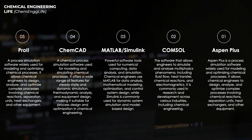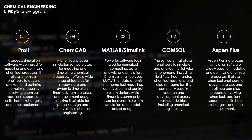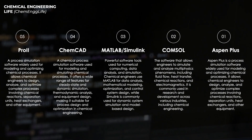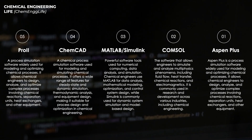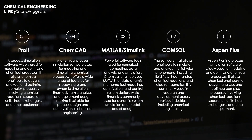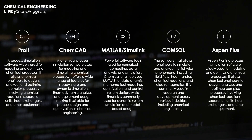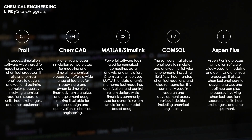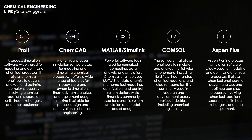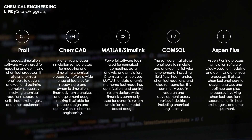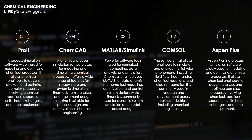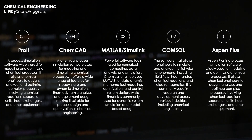Aspen Plus allows engineers to create detailed process models, analyze performance under different operating conditions, and optimize design to meet desired objectives such as cost reduction, energy efficiency, and product quality improvement. The importance of Aspen Plus in the field of chemical engineering lies in its ability to provide chemical engineers with a powerful platform for process design, analysis, and optimization, ultimately leading to more efficient and sustainable industrial operations.